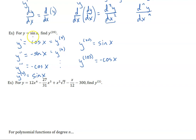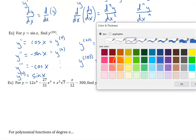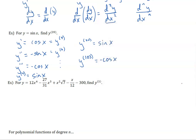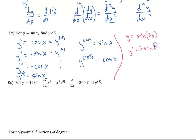One thing I want to point out: this is just for plain sine x and cosine x. If we have something else involved, like a composition of functions, then we need to apply the chain rule correctly. For example, if I had y equals sine of 3x and I wanted to know the 10th derivative, the first derivative would be cosine of 3x times 3, because u equals 3x and u prime equals 3.